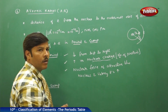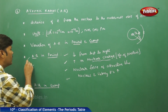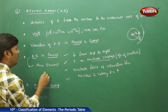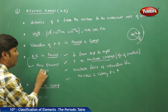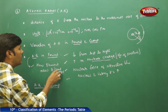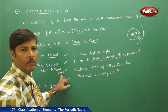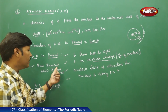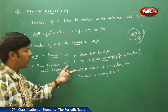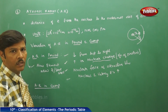One more important point to notice about atomic radius in a period: for every new element, only a new electron is being added to the same shell. That means the number of shells remains constant as you move from one element to another in a period. Because the number of shells remains constant, the nuclear charge increases, and due to the increase in nuclear force of attraction between the nucleus and the valence electrons, the atomic radius decreases.